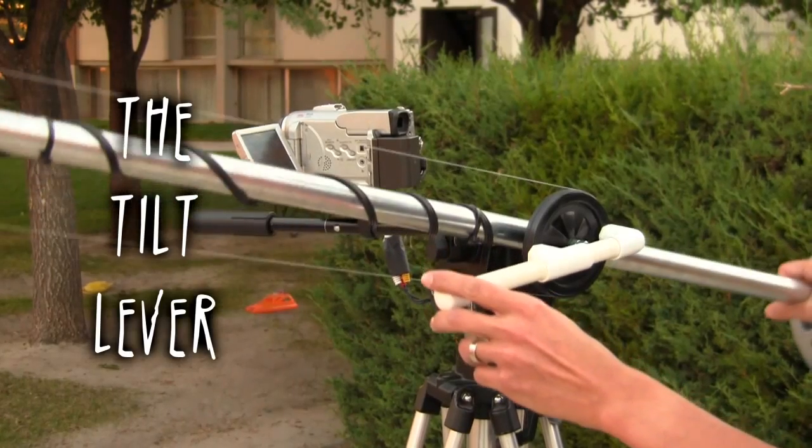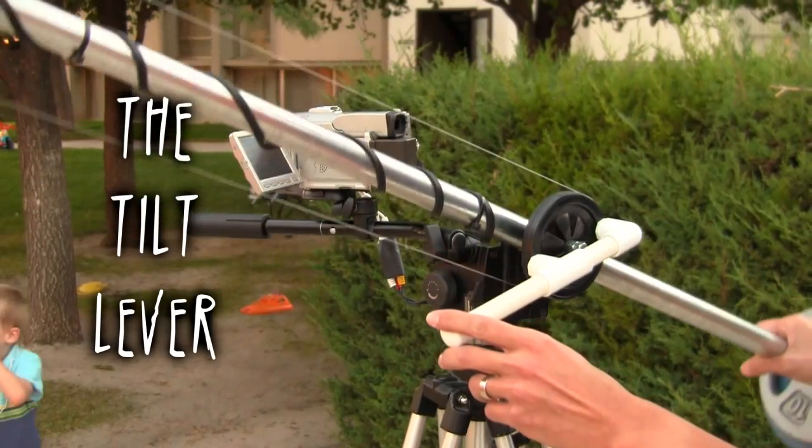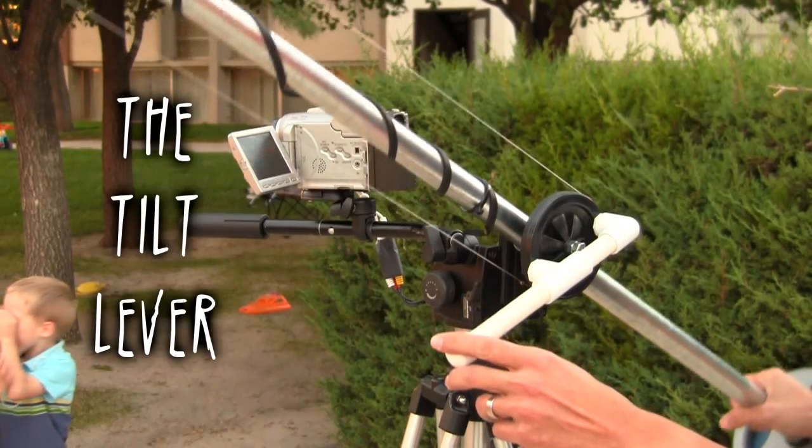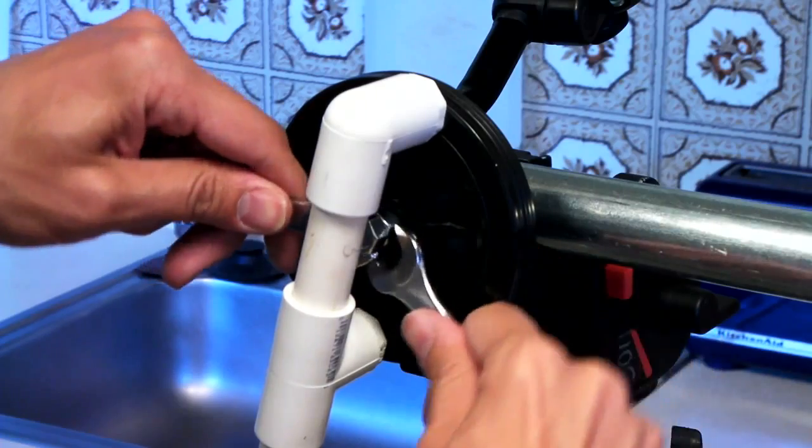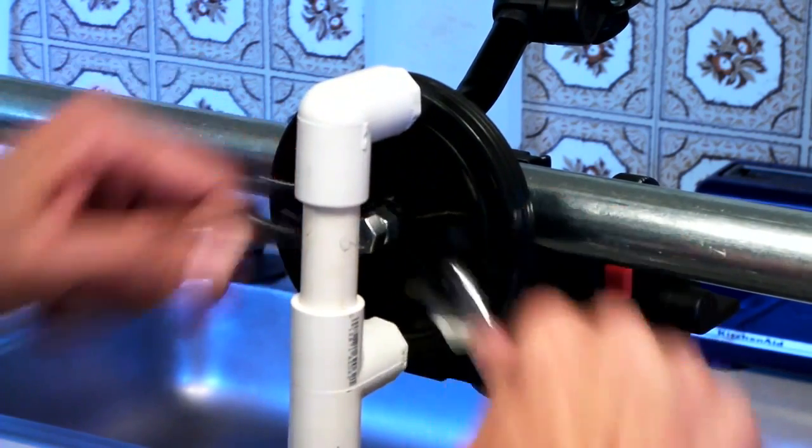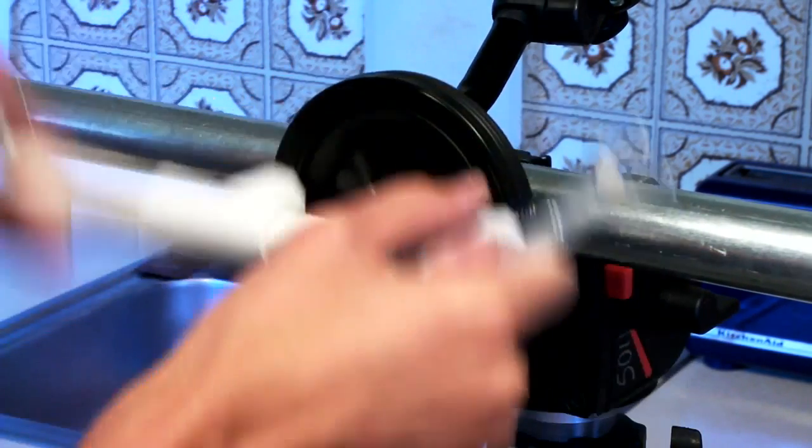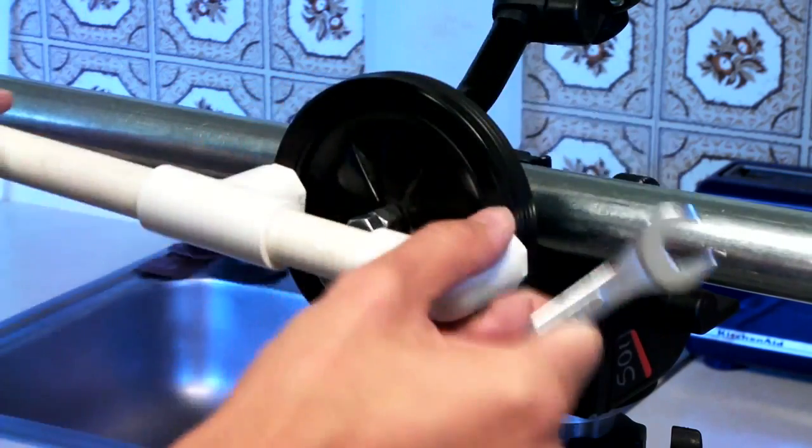The next issue is the tilt lever system, mostly because it uses a plastic pulley held on by the friction of two nuts. And after a while those nuts would bind, or actually the whole pulley would kind of tighten itself, and I was constantly having to adjust the two nuts to get the friction right. I'd have to do this every time I used the crane, which wasn't fun.